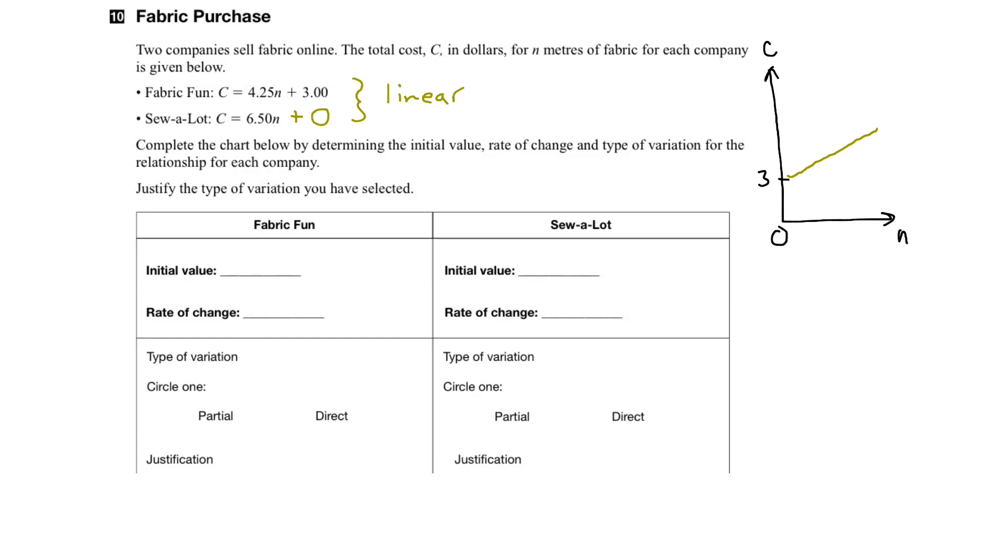And indeed, it is linear. Now, for Solalot, we start at zero cost, or fixed cost, but it goes up at $6.50 per meter. So, we'd start at zero, and the slope in this case is a little bit steeper, so it goes up at $6.50 per meter. So, Solalot is the green line, and FabricFun is the yellow line.